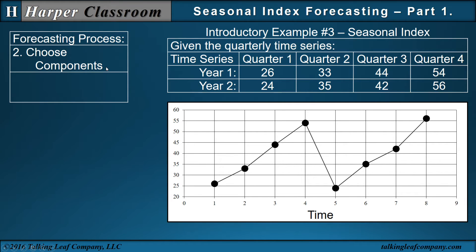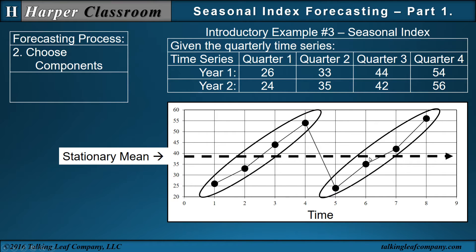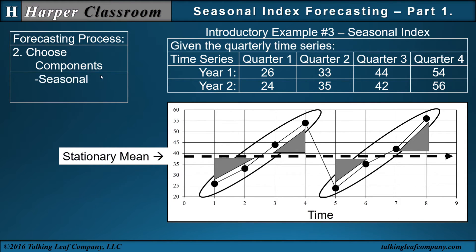Step two is choose your components. Components are a cause of variability, and the variability is around the stationary mean. We see the first four quarters, which is a year, does have an increase, but that pattern within the first year repeats the second year. So when you have variability that is a pattern, and that variability around the stationary mean repeats the next year, that's called a seasonal component.